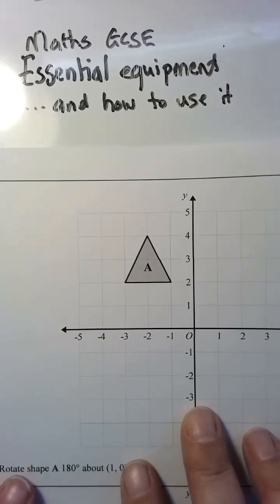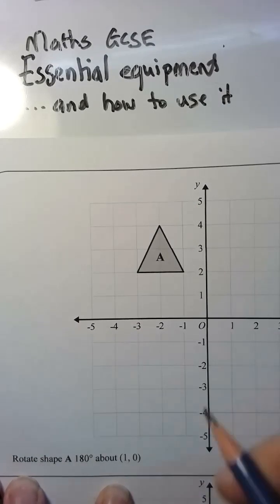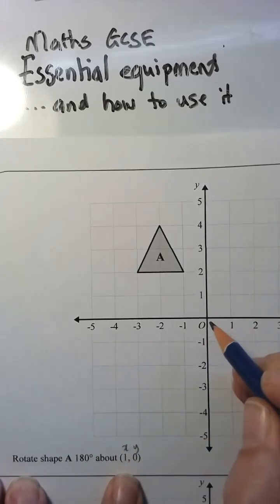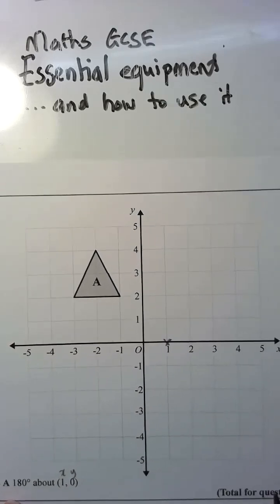Use tracing paper for questions that look like this. We're going to rotate shape A 180 degrees around point (1,0). So the first thing I'm going to do is draw point (1,0) using a pencil. One is your x, zero is your y. So I'm going to go one along the x-axis and I'm not going to move along my y-axis. This is my center of rotation. I'm going to mark it so I know what I'm doing, and I need to move 180 degrees.